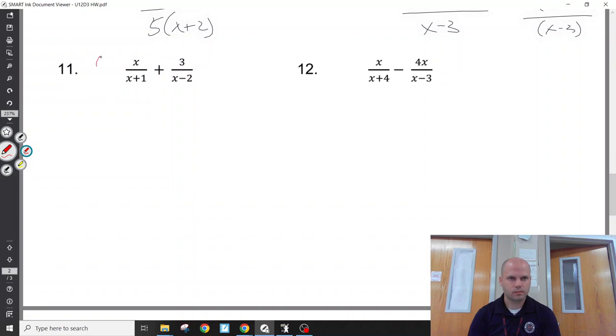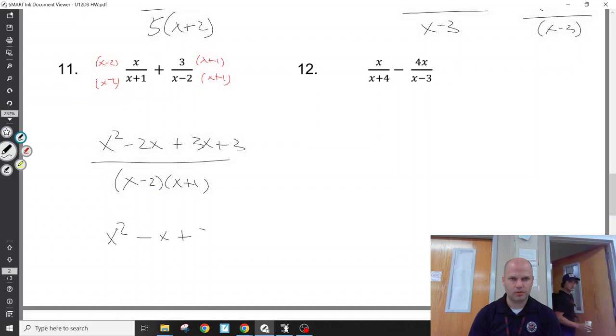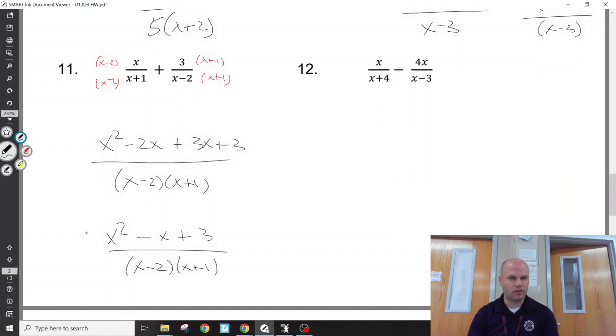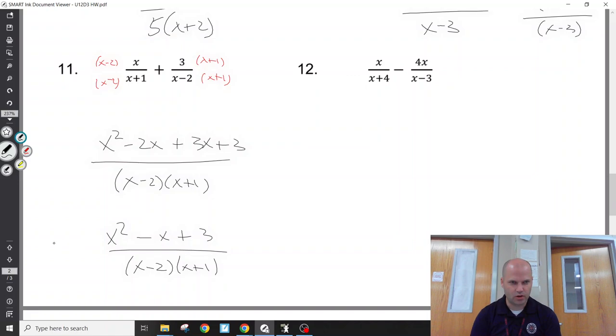Okay, same deal here. Let's distribute the top. I get x squared minus 2x plus 3x plus 3. I get x minus 2 and x plus 1 in the denominator. Leave that. I'll have x squared minus x plus 3. x minus 2, x plus 1. I'd look to factor the numerator, if possible. But there are no two numbers that multiply to get 3 and add to get negative 1. So I'm actually done. There's nothing I can do here. We are completely simplified.